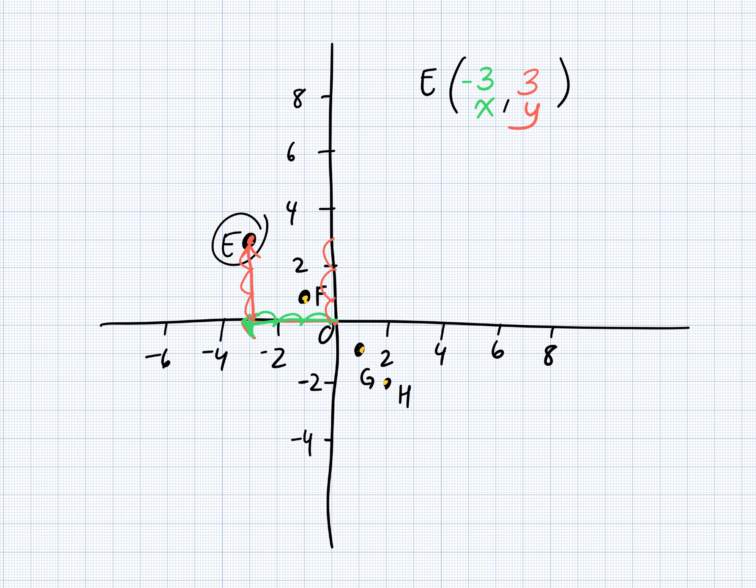Good, so you got negative one. Excellent. And positive one. Correct. Raise your hand if you got negative one, one. Good. G. For G, you got one and negative one. Let's see if you're correct. We move one space to the right, and then one space down. Correct. Raise your hand if you got that right.